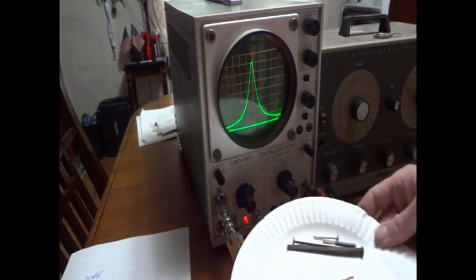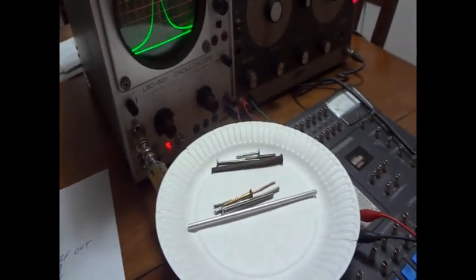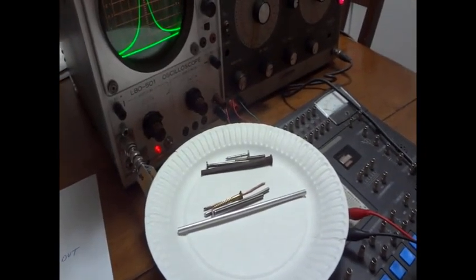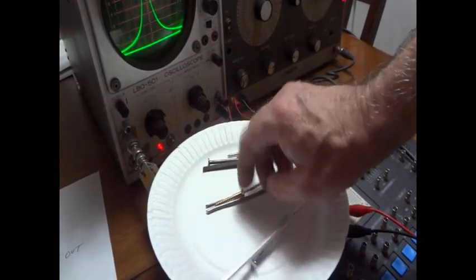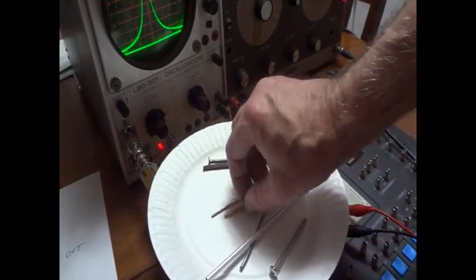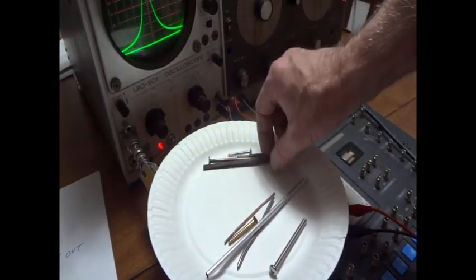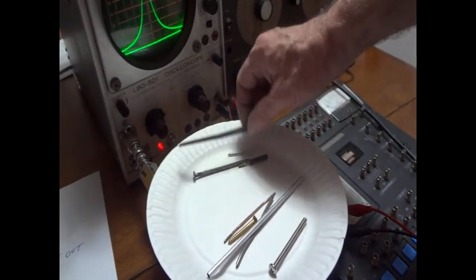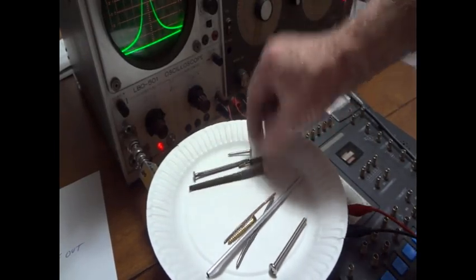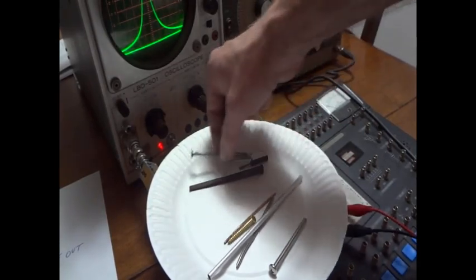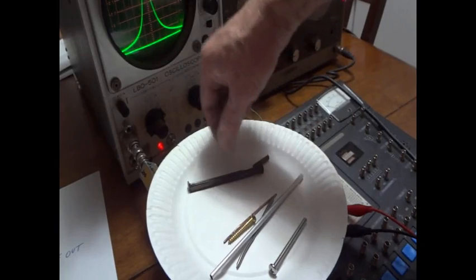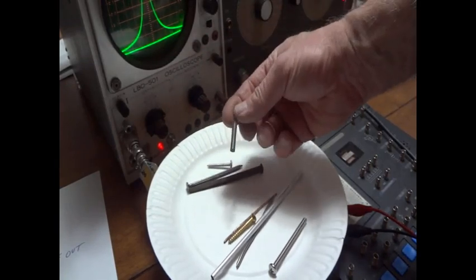Over here we've got a bunch of different metals I'm going to try. Some are magnetic, some are not. We have aluminum, stainless steel, lead, brass, and copper. And over here we have some magnetics: an old cast iron nail, a masonry nail, a common steel screw, and a piece of ferrite.